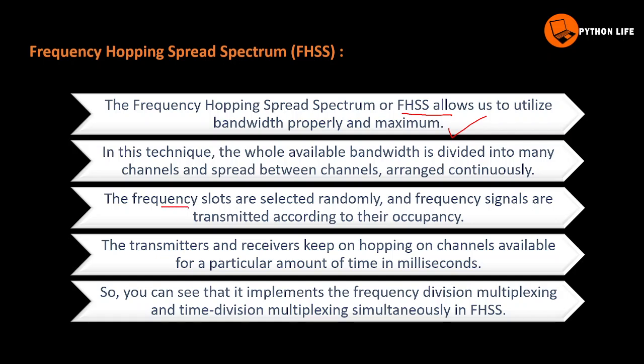The frequency slots are selected randomly, and frequency signals are transmitted according to their occupancy. The transmitters and receivers keep hopping on channels available for a particular amount of time in milliseconds. Both senders and receivers request and use a particular channel.